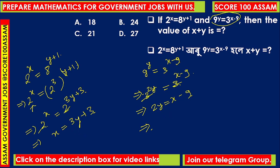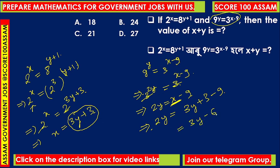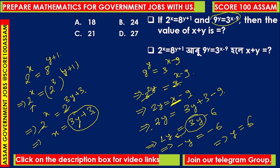Substituting x = 3y + 3 into 2y = x − 9: we get 2y = (3y + 3) − 9, so 2y = 3y − 6, which gives us 6 = 3y − 2y, therefore y equals 6.